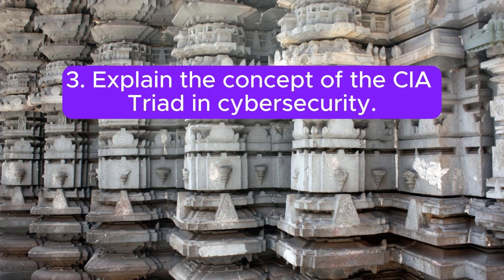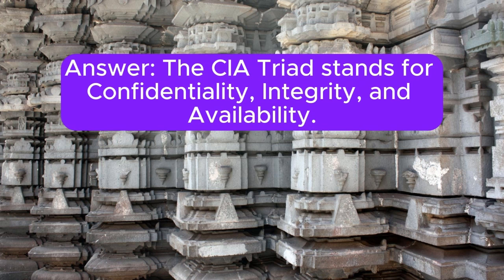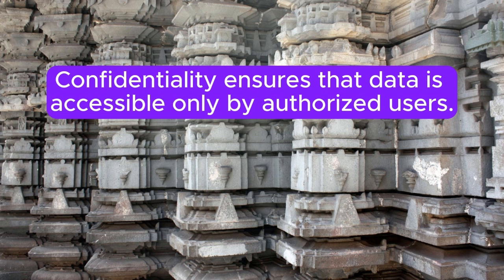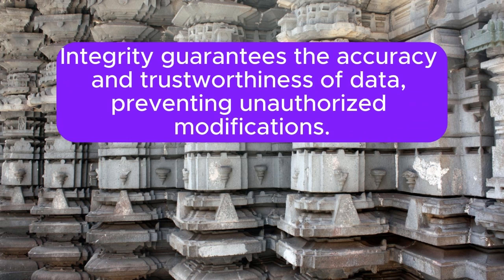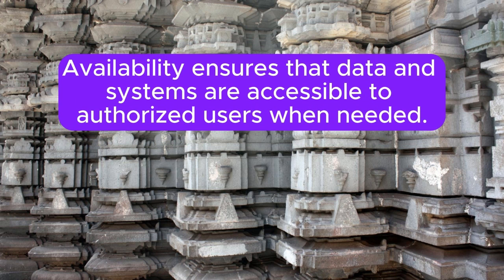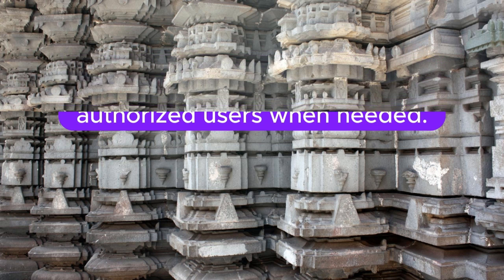3. Explain the concept of the CIA triad in cybersecurity. The CIA triad stands for confidentiality, integrity, and availability. Confidentiality ensures that data is accessible only by authorized users. Integrity guarantees the accuracy and trustworthiness of data, preventing unauthorized modifications. Availability ensures that data and systems are accessible to authorized users when needed.